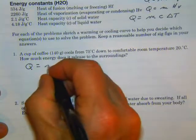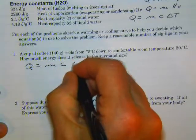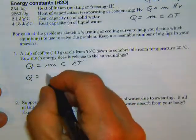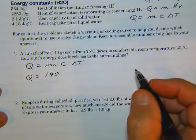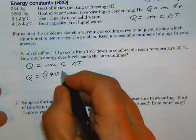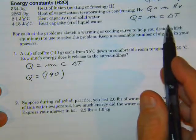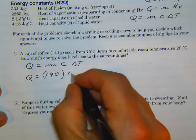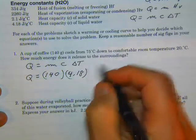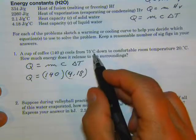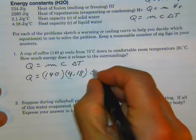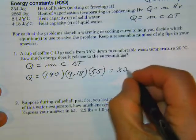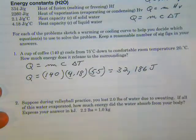Q equals the mass times the heat capacity times delta T. We want to know how much energy, so we don't know Q. We know there's 140 grams, and we're looking for the heat capacity of liquid water, which is 4.18 joules per gram degree Celsius. We have a temperature change: 75 down to 20, so it's a change of 55 degrees. Straight multiplication gives us 32,186 joules.